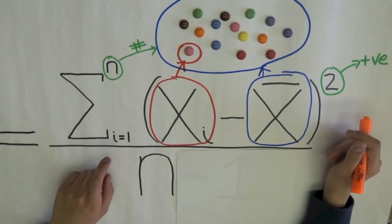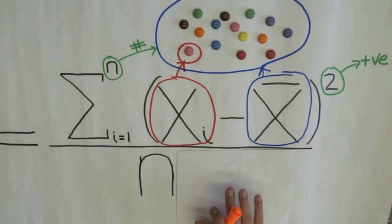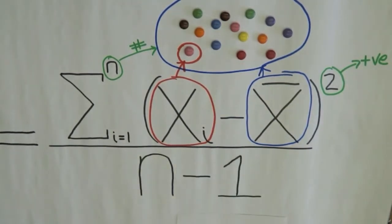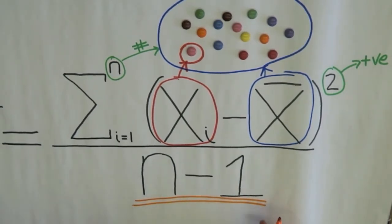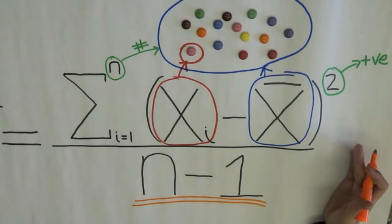Now, you might think that the next step is to divide the expression by n and that this will give you your sample variance, but this is not true. We do not divide this expression by n. Instead, we divide it by n minus 1. So, dividing this expression by n minus 1 gives us our formula for variance.